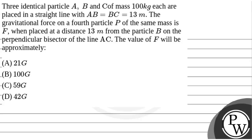Let's read the question. Three identical particles A, B and C of mass 100 kg each are placed in a straight line with AB equal to BC equal to 13 meters. The gravitational force on a fourth particle P of the same mass is F when placed at a distance 13 meters from particle B on the perpendicular bisector of line AC. The value of F will be approximately?